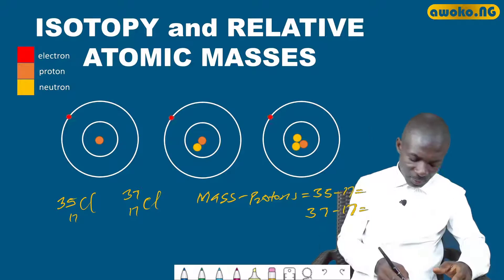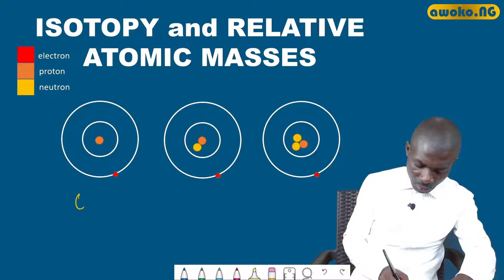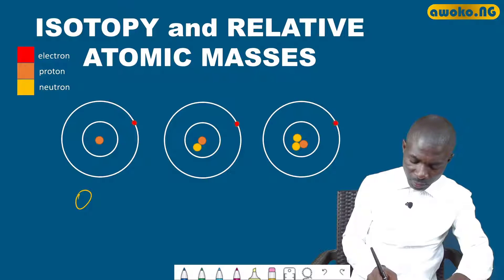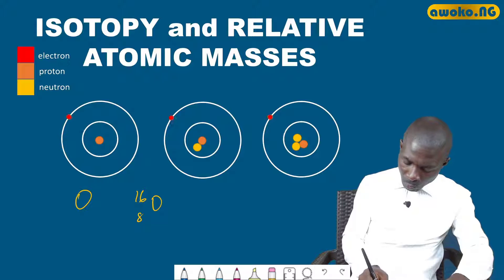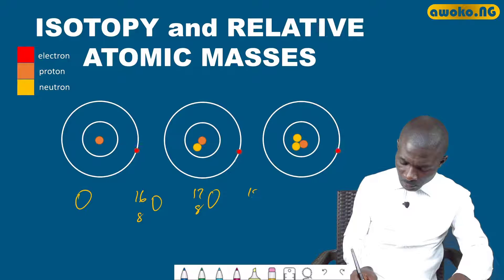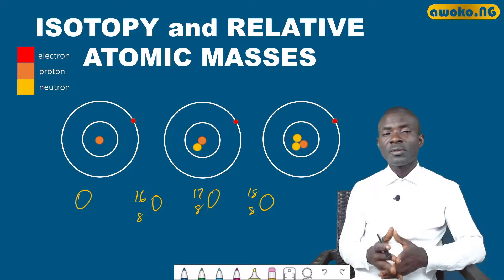Other elements that exhibit isotopy include oxygen, which has three possible isotopes: ¹⁶O (atomic number 8), ¹⁷O (atomic number 8), and ¹⁸O (atomic number 8). These are the three isotopes of oxygen.